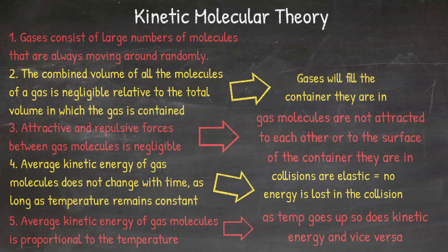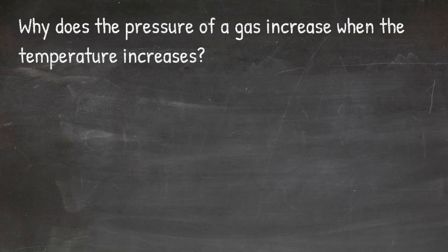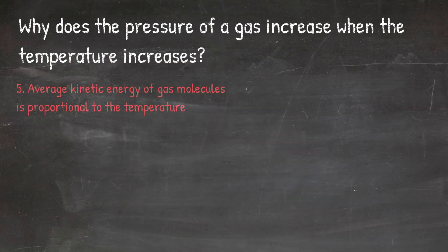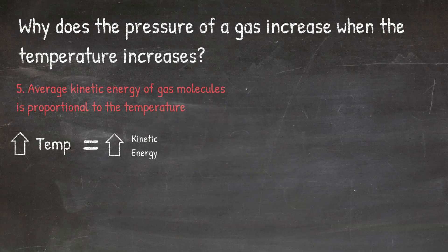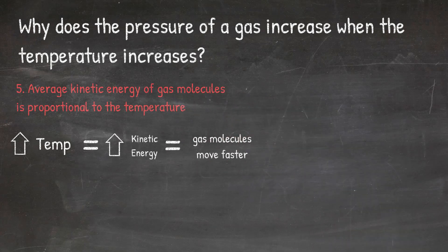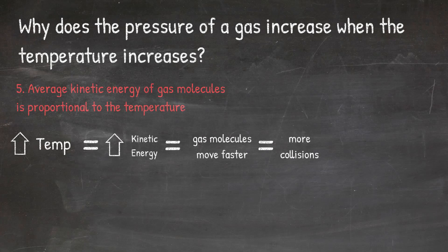Now that we understand the five parts of the kinetic molecular theory, let's look at how we can use these to help us explain the behavior of gas molecules. In our first scenario, we'll answer the question: why does the pressure of a gas increase when the temperature increases? Step five tells us that the average kinetic energy of the gas molecules is proportional to the temperature, meaning as we increase the temperature, the kinetic energy also increases. Kinetic energy is the energy of motion, so this increase causes the gas molecules to move faster.